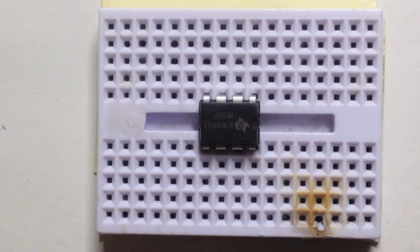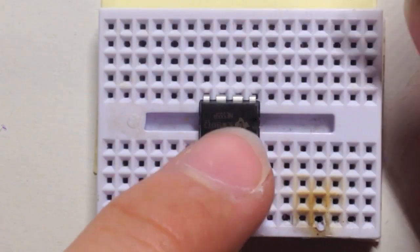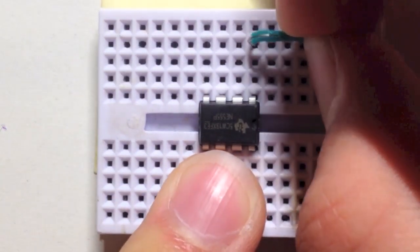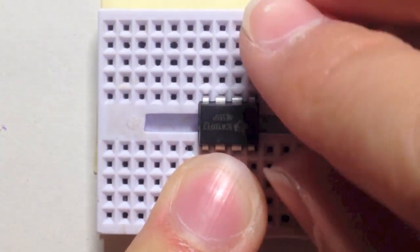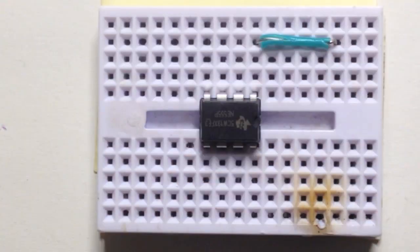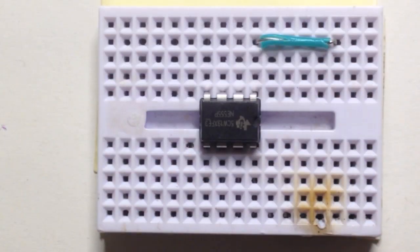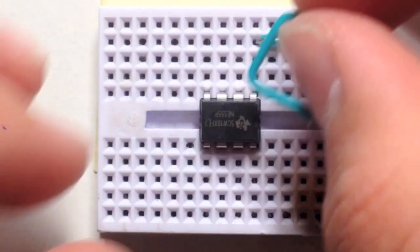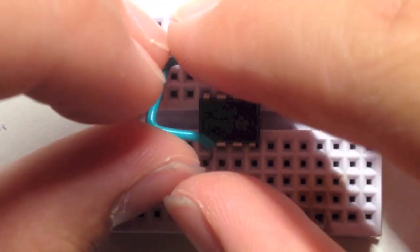Alright, proceed by attaching an extension wire to pin 1. This wire will serve as the ground terminal for the circuit. Proceed by connecting pins 2 and 6 using a bent wire.